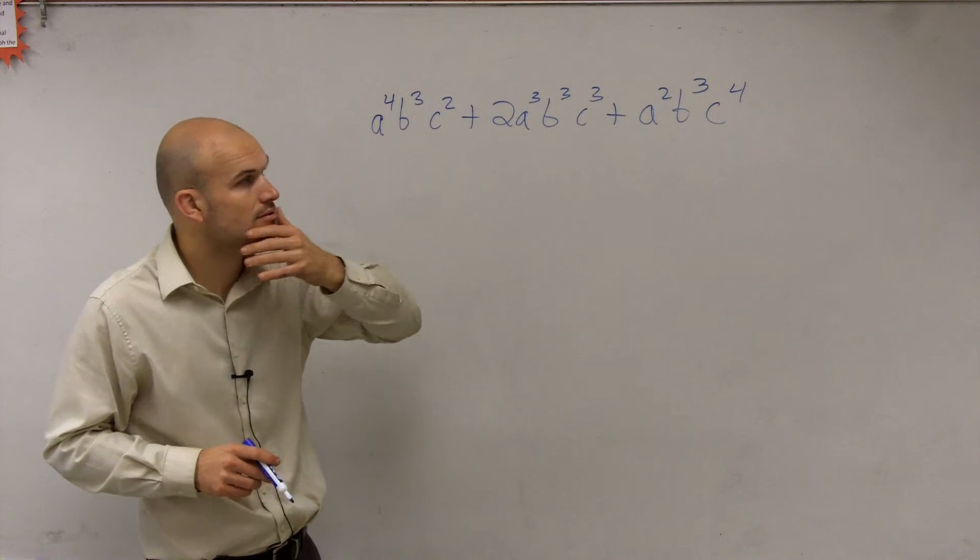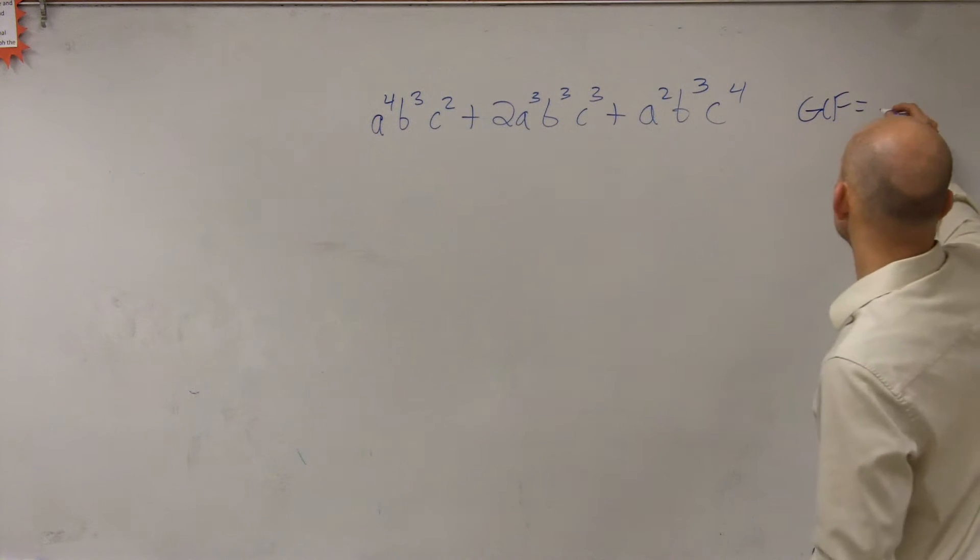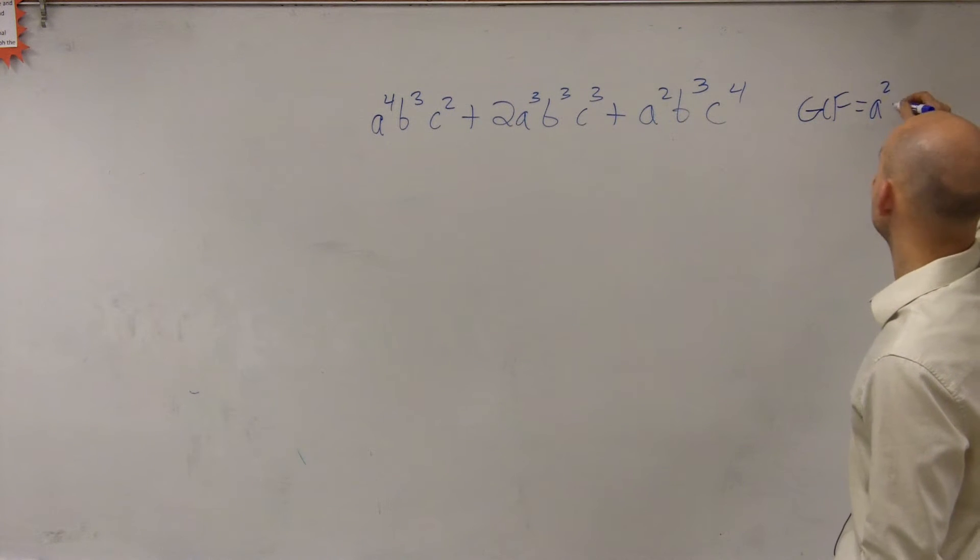Yes? It's a squared, b cubed, c squared. OK. So let's take a look. You guys say a squared, b cubed, and then c squared, right? Yes. Good.